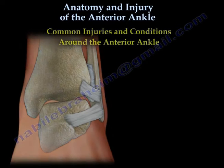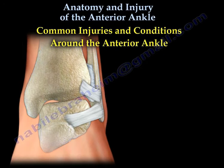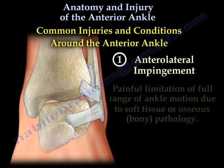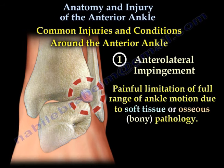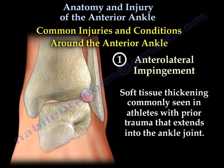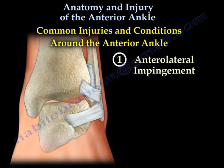Common injuries and conditions around the anterior ankle. The first condition is anterolateral impingement — a painful limitation of full range of ankle motion due to soft tissue or osseous pathology. Soft tissue thickening is commonly seen in athletes with prior trauma that extends into the ankle joint. This type of impingement may also be bony.